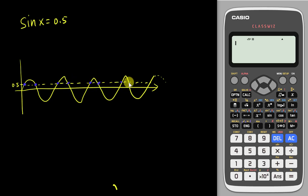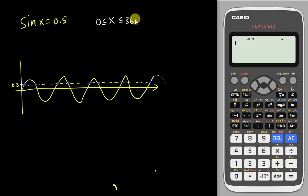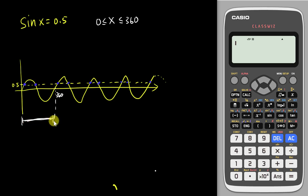Normally, if the question asks you to find sine x equals 0.5, it's very important that the question gives you a range. They will tell you the angle x must be between 0 and 360. That means I only focus on one cycle, and I find how many blue dots I have, which is 2 — so I only have 2 answers.